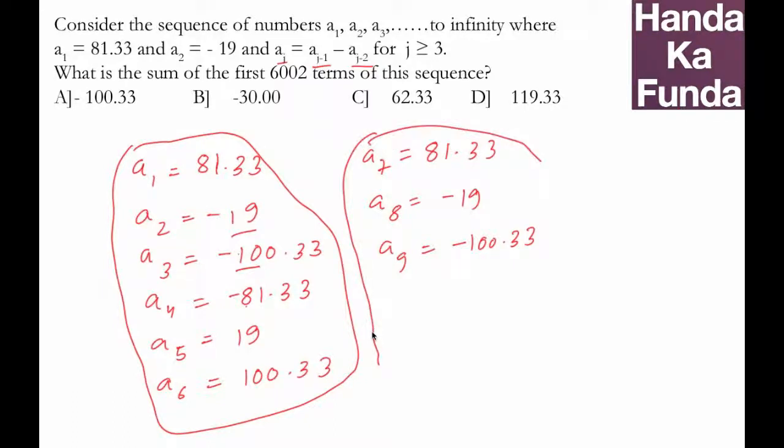We are asked to find the sum of the first 6002 terms. What is the sum of the first six terms? If you add them all up, -19 plus 19 will cancel, 81.33 minus 81.33 will cancel, -100.33 and plus 100.33 will cancel, so this would be zero. The sum of the next six terms will be zero as well.